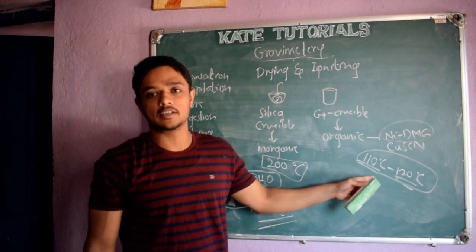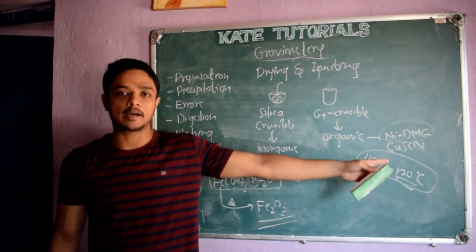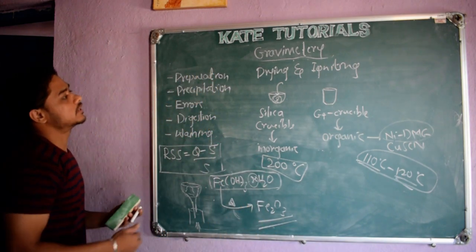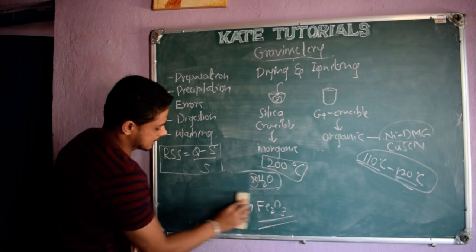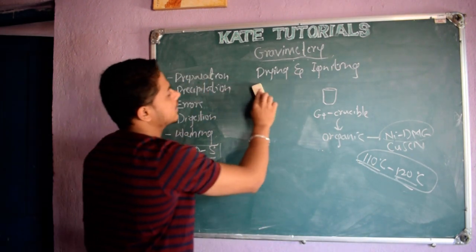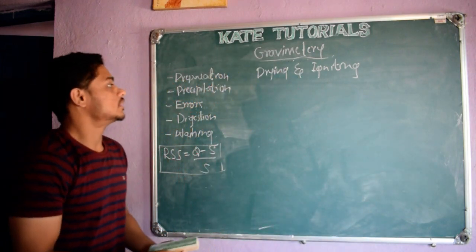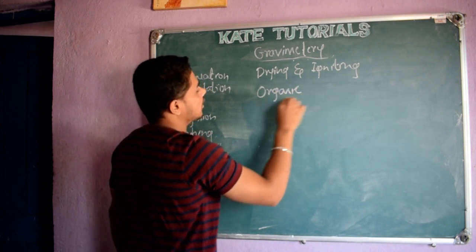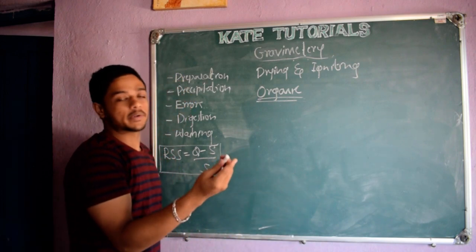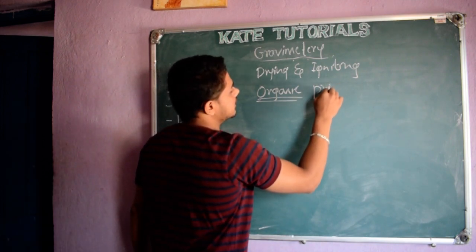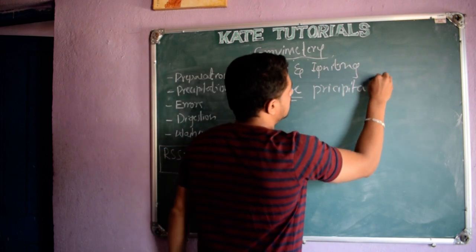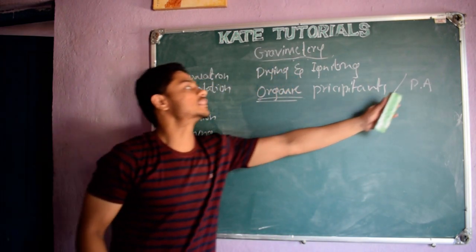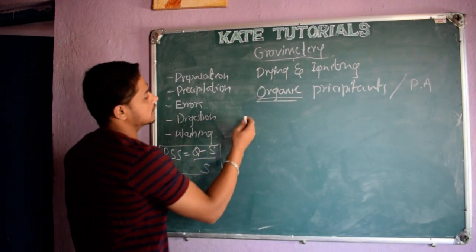If I supply 150 degrees Celsius, the nickel DMG complex will decompose and the DMG may go as water and carbon dioxide. That is all about drying and igniting. Now let us discuss the difference between organic and inorganic precipitants — the organic precipitating agents.